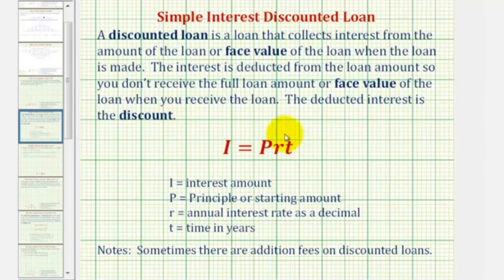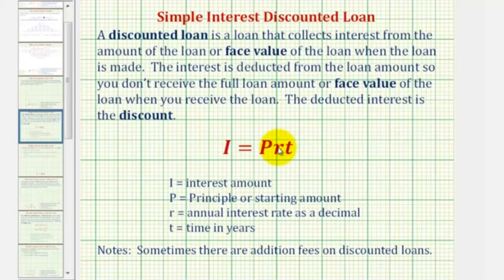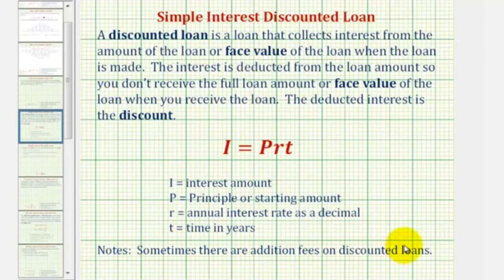For review, here's the simple interest formula where I is the interest amount, P is the principal or starting amount of the loan, R is the annual interest rate expressed as a decimal, and T is time, which must be in years. It should be noted that sometimes there are additional fees for discounted loans.